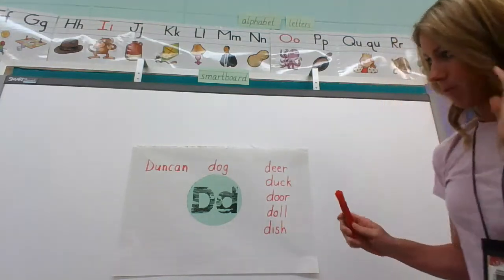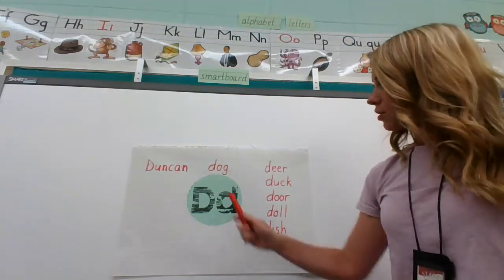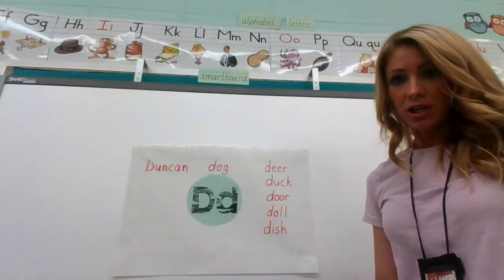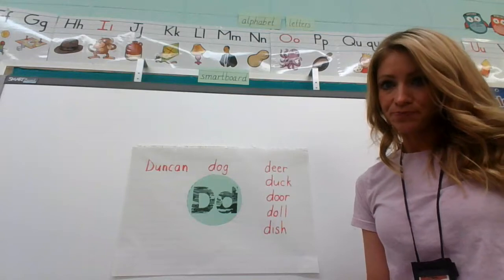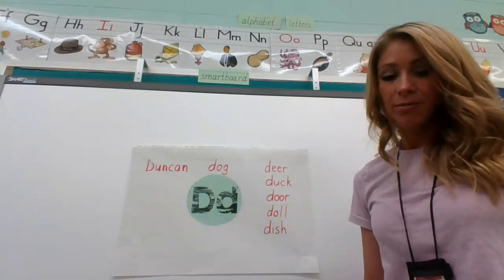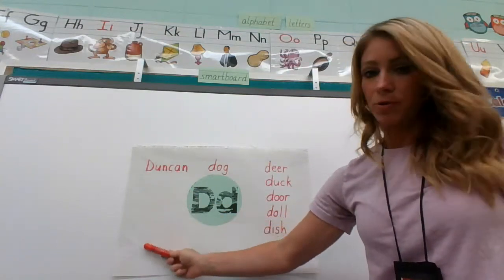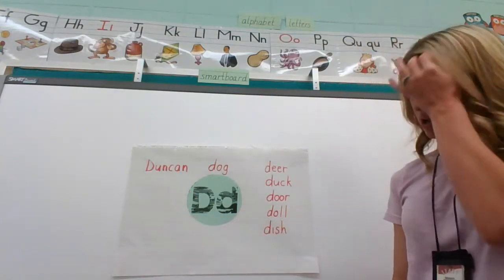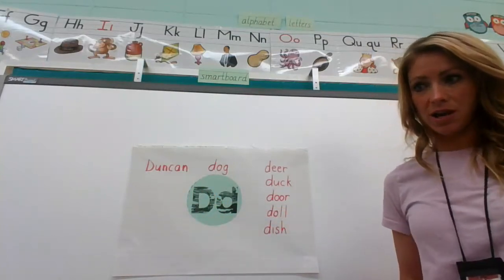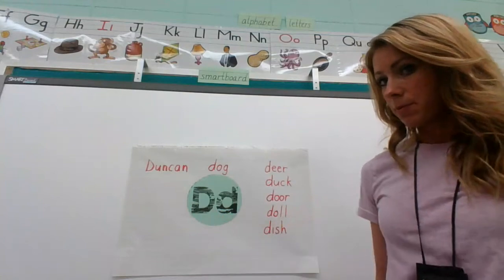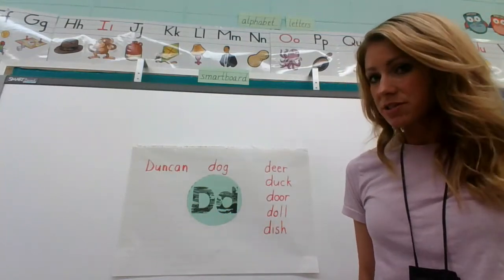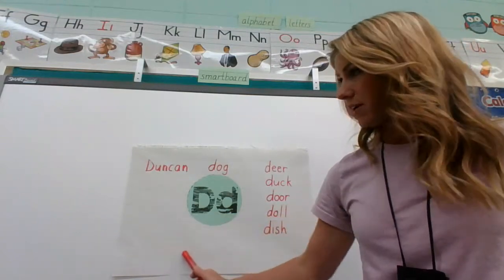First we need to go through and read these words together like we do every day. This spot's blank — usually if you were in class right now, that is where your teacher would ask you to name lots of D words. You would get to come up with your own D words to add there. So right now, while you're sitting there, I want you to say out loud some more D words that you can think of. Pretend like I can hear all those words. Good job with all those D words you did!